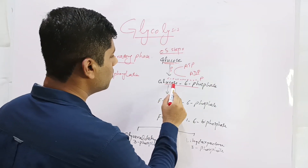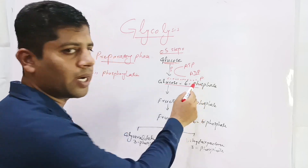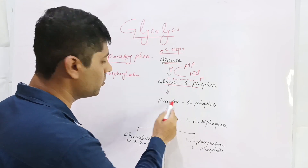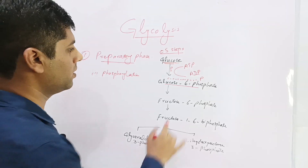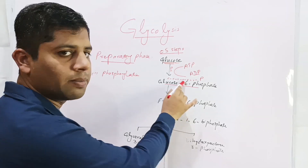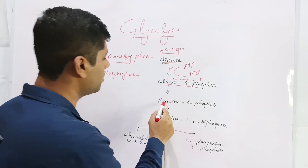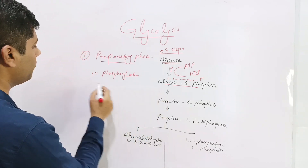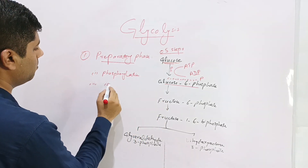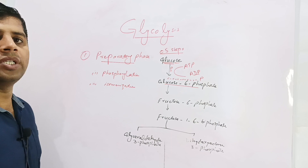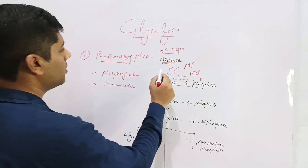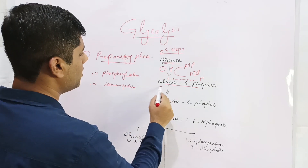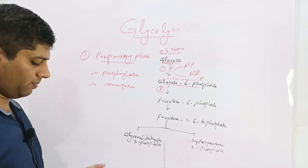In the second step, glucose-6-phosphate isomerizes — the glucose molecule is converted into fructose, while the phosphate remains attached to carbon number six. This product is called fructose-6-phosphate. This step is called isomerization because only an isomerization has taken place.